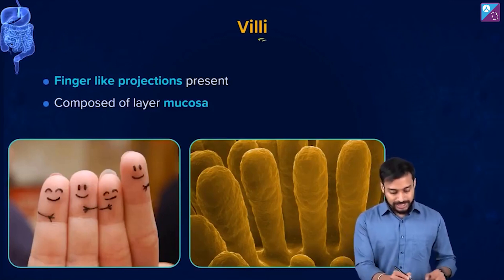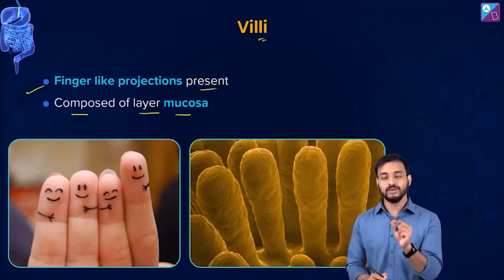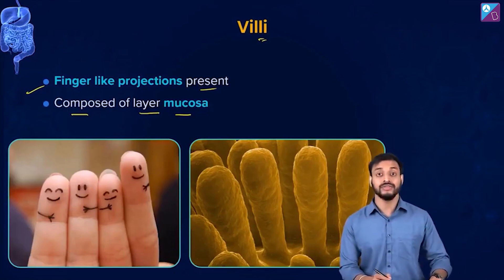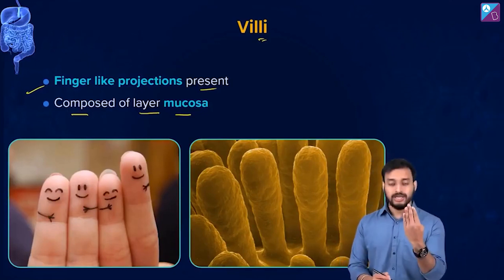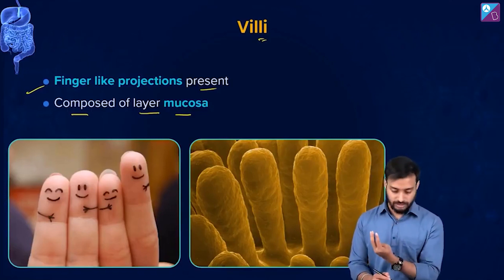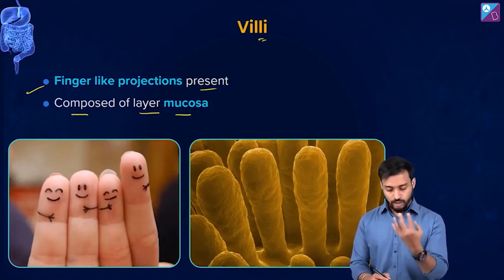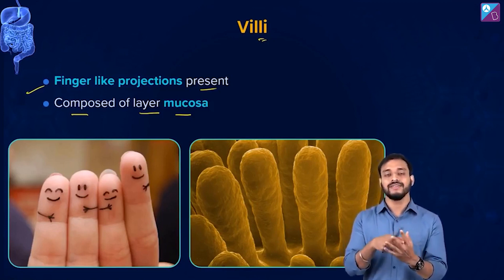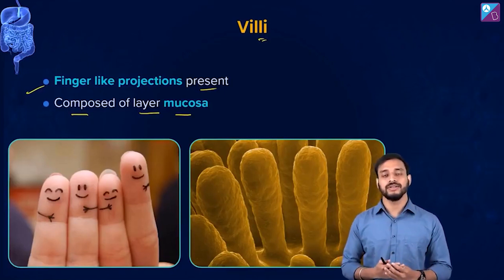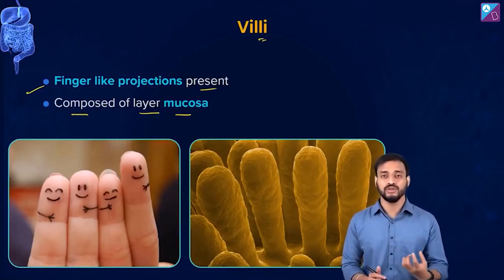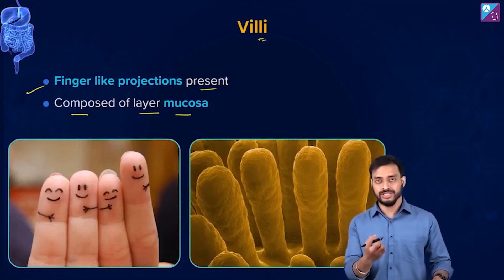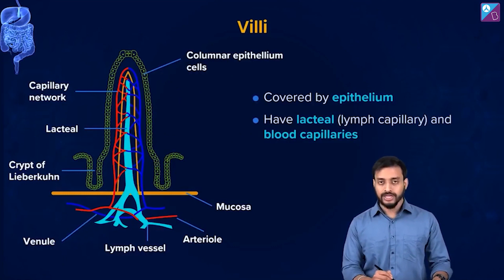These villi are finger-like projections composed of the mucosa layer, which we will study towards the end of the session when we cover the different layers of the alimentary canal. Their function is increasing the surface area for absorption, which is one of the main functions of the small intestine — absorption of the nutrients from the digested food.